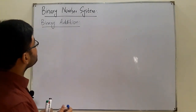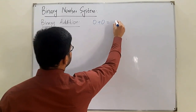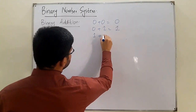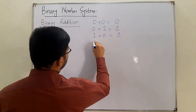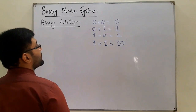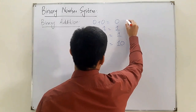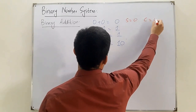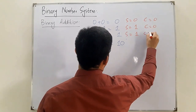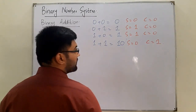Since we have only zeros and ones, the binary addition rules are: 0 + 0 = 0 (sum 0, carry 0); 0 + 1 = 1 (sum 1, carry 0); 1 + 0 = 1 (sum 1, carry 0); and 1 + 1 = 10 (sum 0, carry 1).